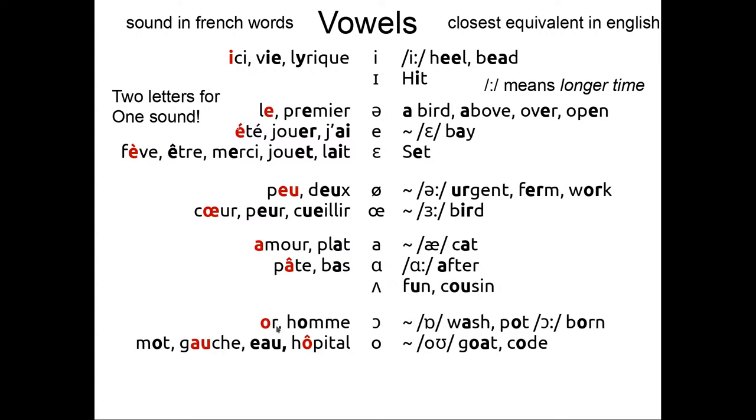The letter O can be pronounced in two different ways, either the open O, like in or, homme, either the closed O, like in mot, gauche, eau, hôpital. I'm not going to do the English equivalent. Finally, if you see OU, it's the OU sound, like in genou. It's the same as boom in English, but shorter.